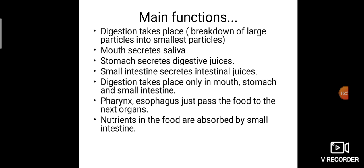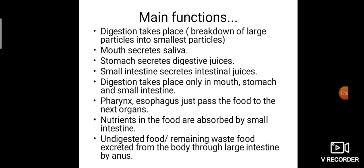Nutrients are absorbed by the small intestine since digestion is completed there. The remaining undigested food then enters the large intestine. Through the large intestine it passes into the anus and is removed as a waste product called feces — the unwanted food coming out of our body. The organ that excretes this waste is the anus.